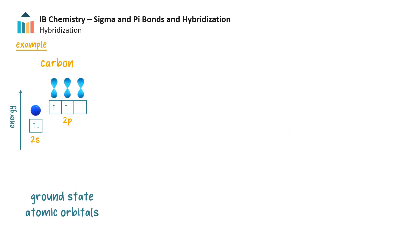The carbon atom in the ground state, which is a low energy state, contains two unpaired electrons. From this diagram, we would expect carbon to form only two bonds. However, during bonding, energy is used to promote one of carbon's 2s electrons to the empty 2p orbital.